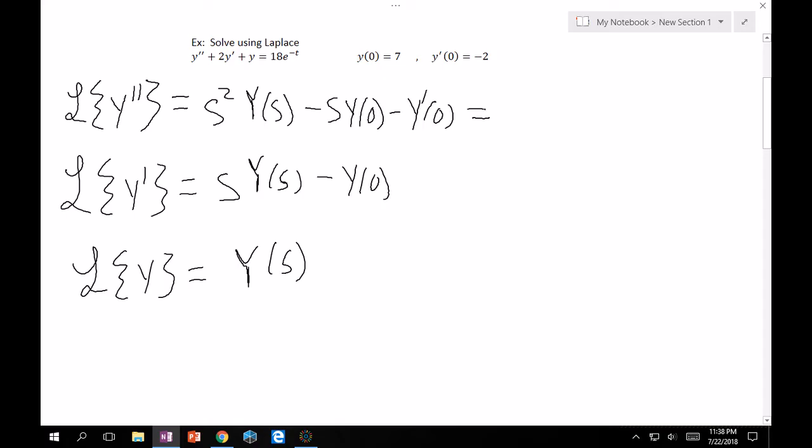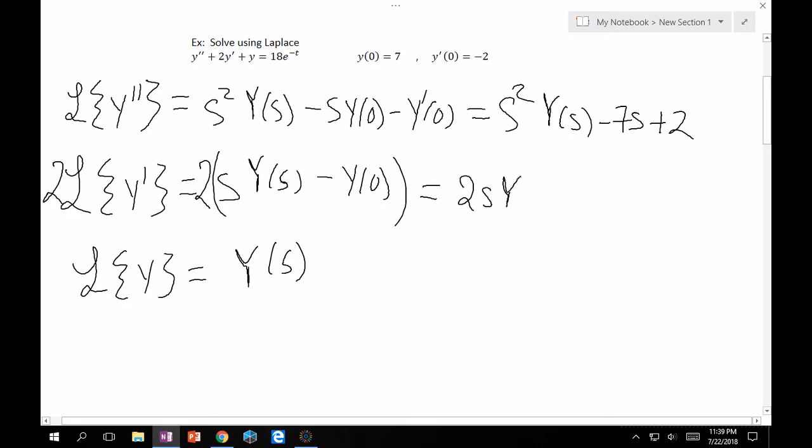Over here, this is just going to be, oh, and let's put a 2 over here. I'll take care of this now, which means that obviously this is multiplied by 2. S squared Y of S, that's fine. We can't do anything with that. Minus s Y of 0, so that's going to be a minus 7s. Minus Y prime of 0, that's minus minus 2, so that's a plus 2. This over here is going to be 2s Y of S. Minus 2 times whatever it is at 0, which is 7, so that's minus 14. And then Y of S is just Y of S.